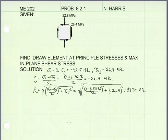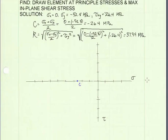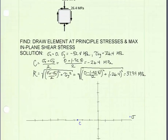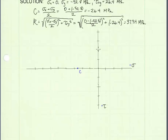The next thing I'm going to do is draw my circle. I've drawn my coordinate system with positive sigma going to the right on the horizontal axis and tau on the vertical axis, positive going downward. I've plotted the center of my circle at negative 26.4 megapascals on the sigma line. The next thing I'm going to do is plot the x-face of my element. The x-face has a normal stress of 0 and a shear stress of negative 26.4 megapascals, so we'll plot it at approximately that location — and I'll call that my x-face.